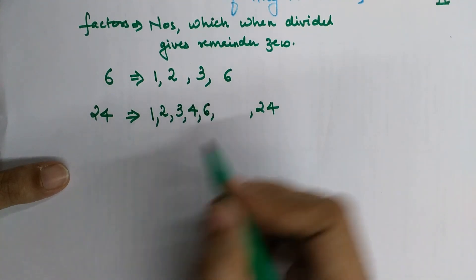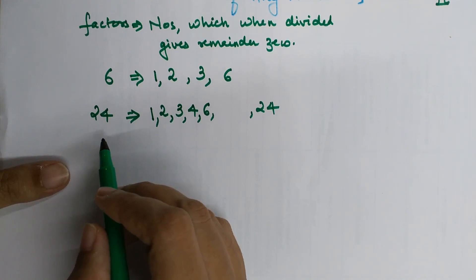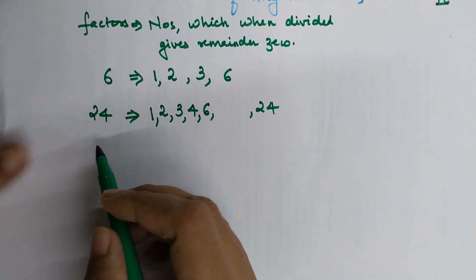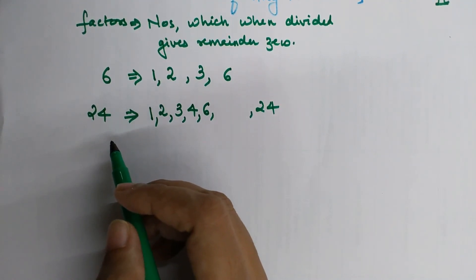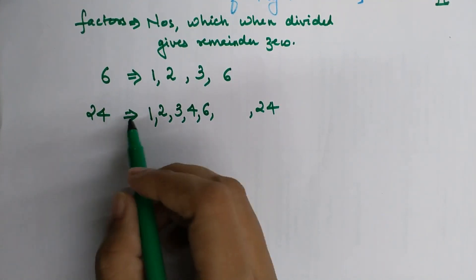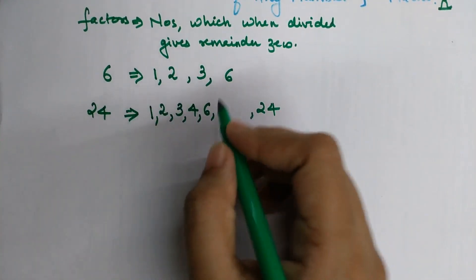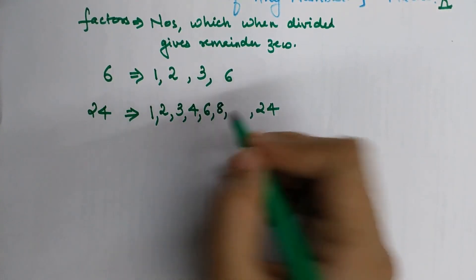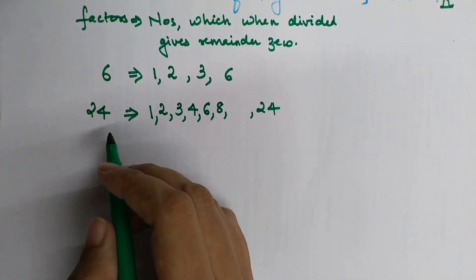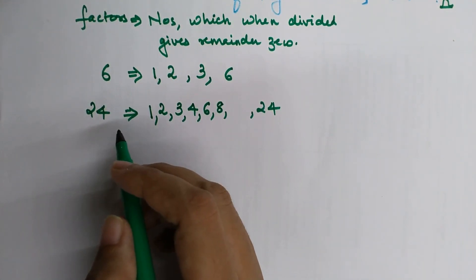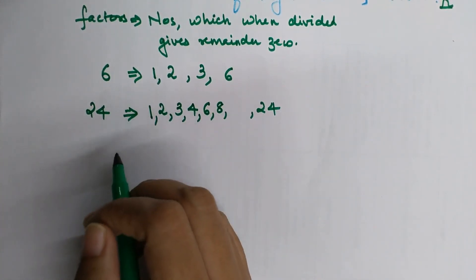Checking 7: 7 threes are 21 and 7 fours are 28, so 24 is not divisible by 7. Checking 8: 3 eights are 24, so 8 completely divides 24 — we write 8. Checking 9: 9 does not divide 24 completely; it gives a remainder, so 9 is not a factor.